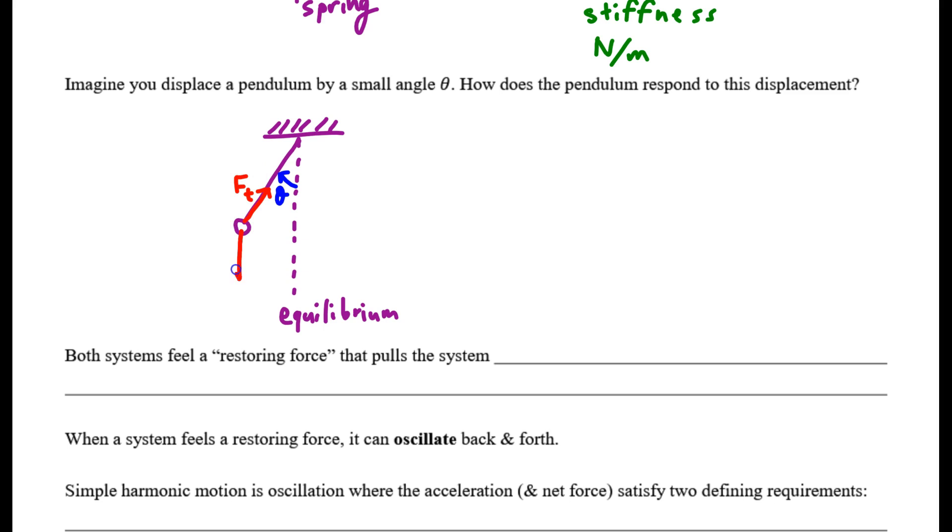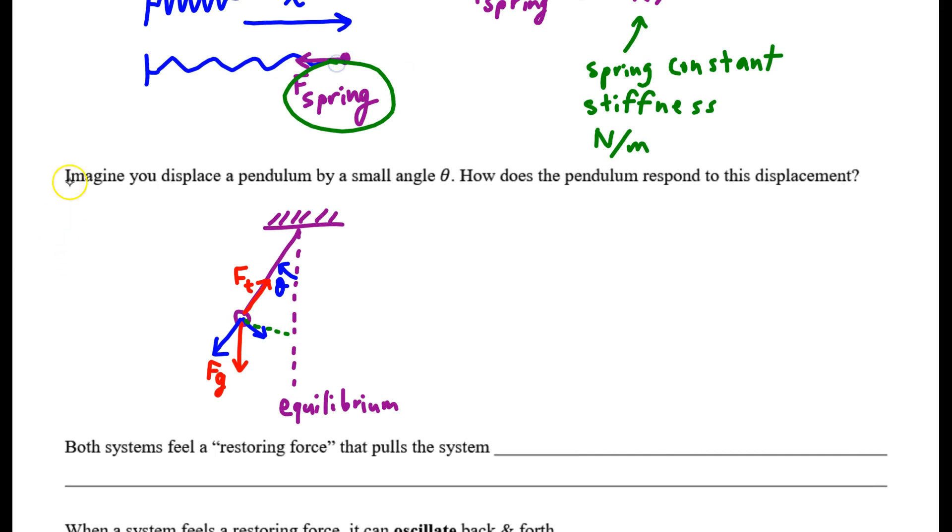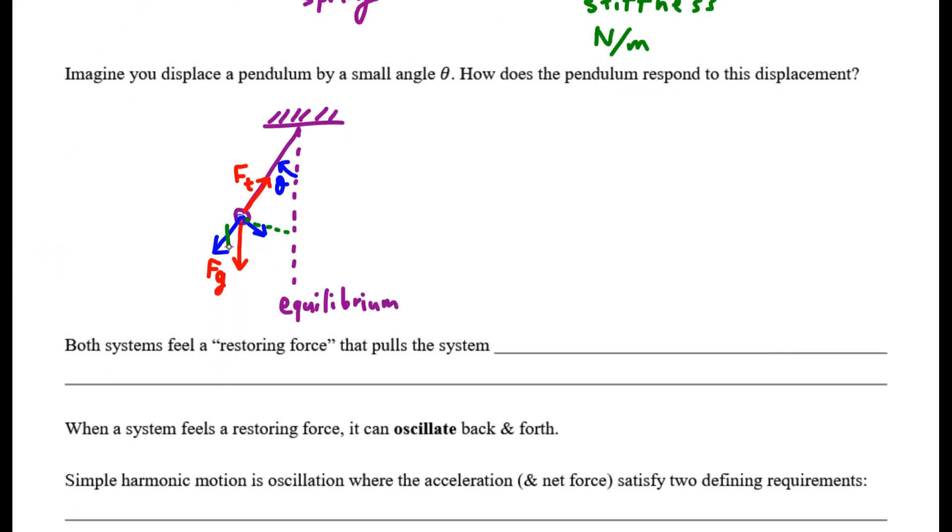We have gravity pulling down. The gravity force has two components: one that cancels out the tension if it's at rest like this, and one that is tangential to the path. So if we imagine this arc, that blue arrow pointing back toward equilibrium is also a restoring force, just like the spring force. These cancel out. We can get rid of the hypotenuse because we broke it into components.